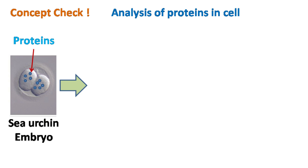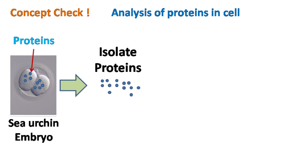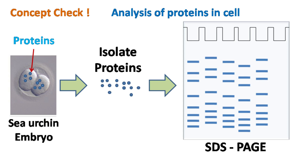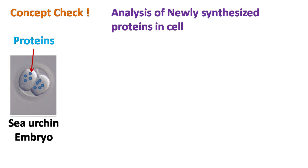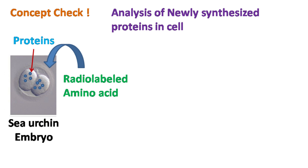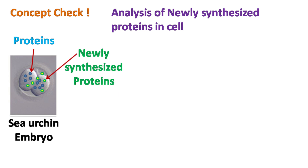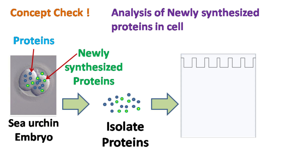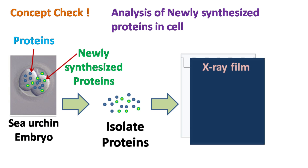One way to resolve proteins is to isolate them and subject them to SDS-PAGE. However, to detect newly synthesized proteins from proteins that are already synthesized, we have to use a pulse-chase technique. In this, we pulse the cells with radiolabeled amino acid and chase the radioactivity in newly synthesized protein by performing SDS-PAGE and autoradiography. The presence of bands in autoradiography will indicate newly synthesized protein.